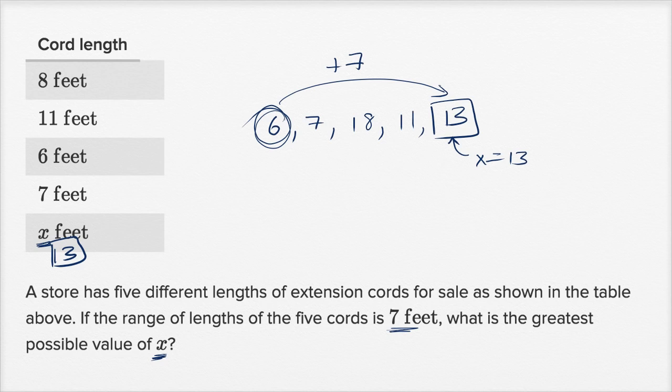Now, if someone were to say, what would be the lowest possible value for x, you'd want to go the other way around. So if there's six, seven, 18, and 11, and if you wanted to minimize the value for x, you want to make x as small as possible, then you would say, okay,